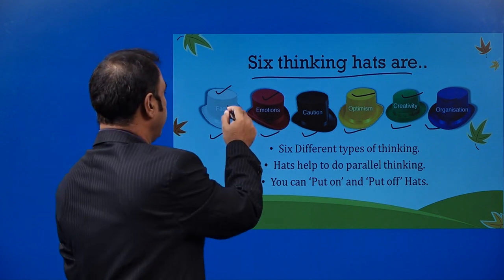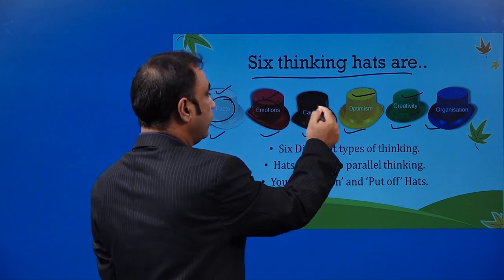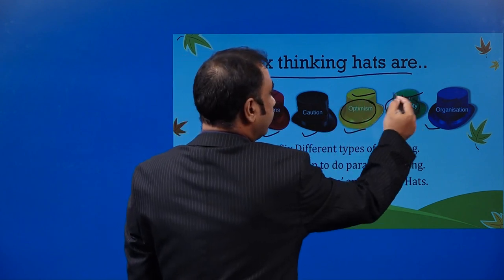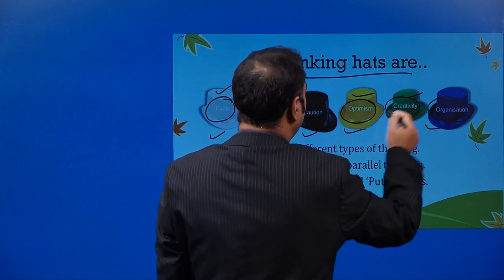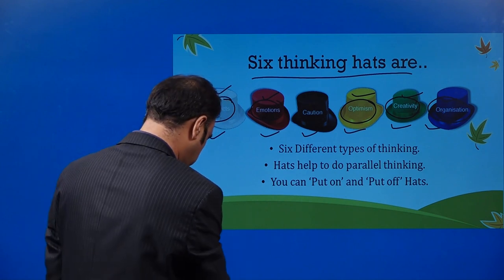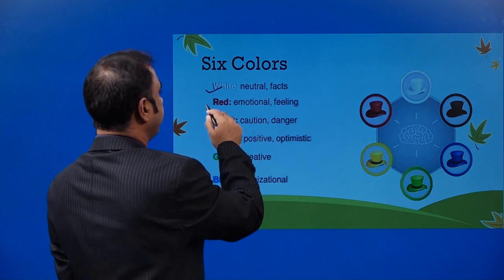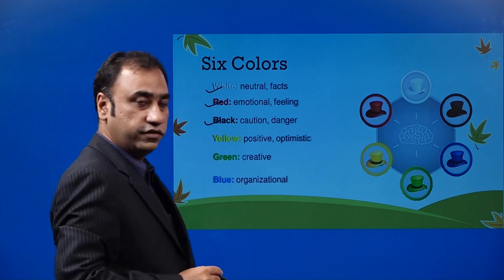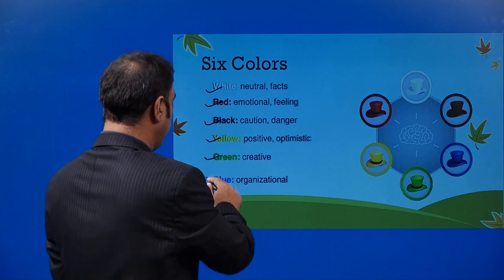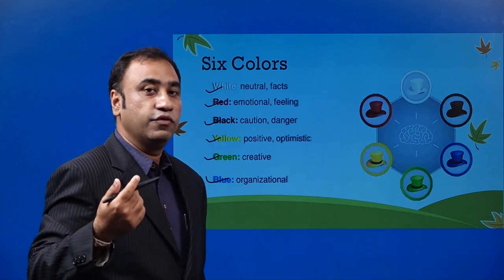White is more about understanding facts. Red is more about emotions. Black is more about cautioning yourself. Yellow is more about optimism and thinking positive. Green is more about thinking creatively. Blue is all about organizing all these hats and finally selecting a thinking process. So the six colors are: white — neutral and facts; red — emotional feeling; black — caution and danger; yellow — positive and optimistic; green — creative; blue — organizational.